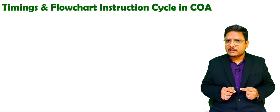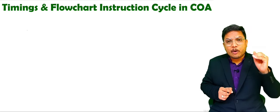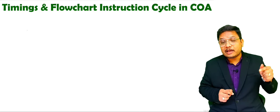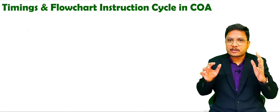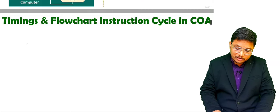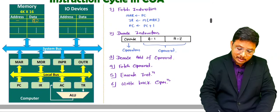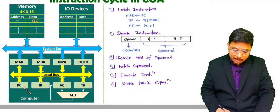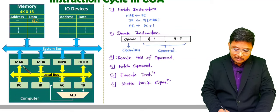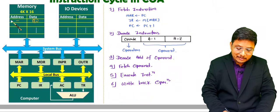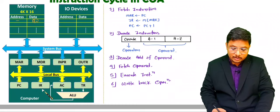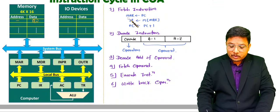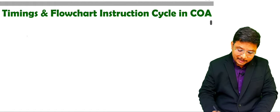Let us try to understand first how fetch is happening with respect to the timing cycle. Remember one thing — here everything will happen with respect to clock. One by one, clock will be there and with respect to clock only, all the operations will happen. When you want to fetch the instruction, the instructions will be there inside memory. That instruction should go inside the IR register. So first of all, the program counter will give its content to the memory address register, which is directly connected with the address of the memory, and we can take the instruction inside CPU. I will show you how it is happening with respect to time cycle.